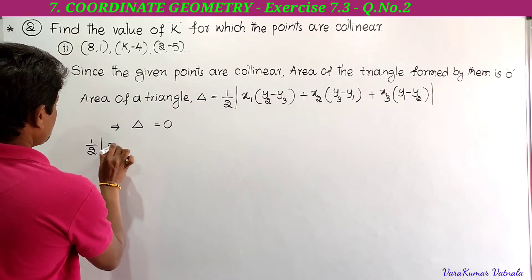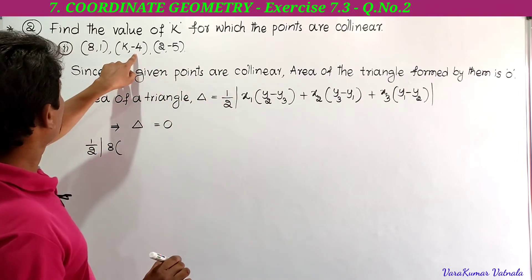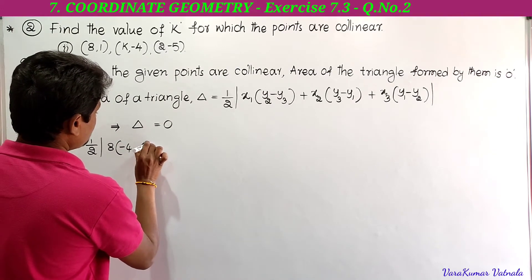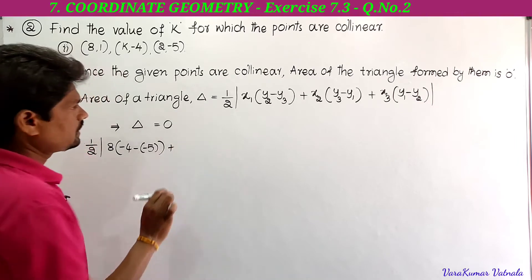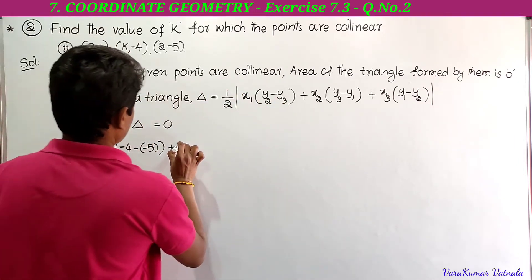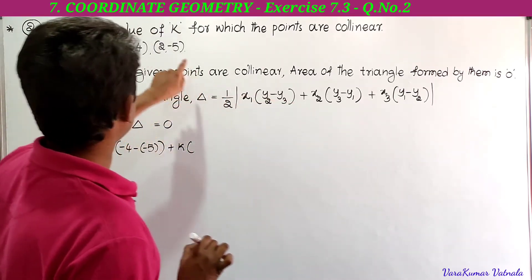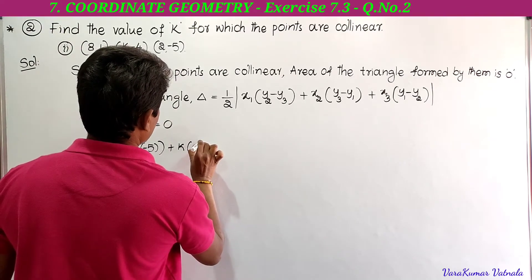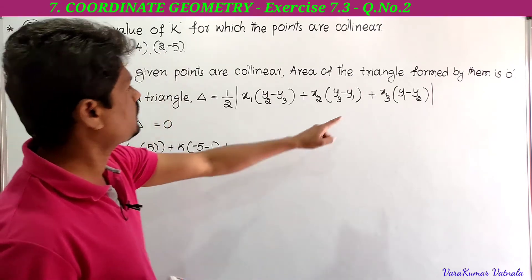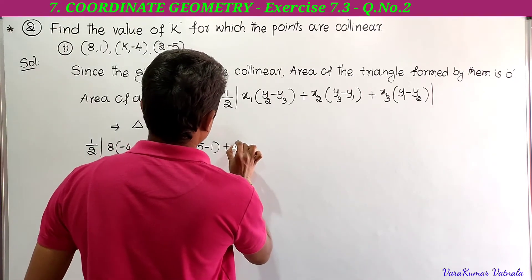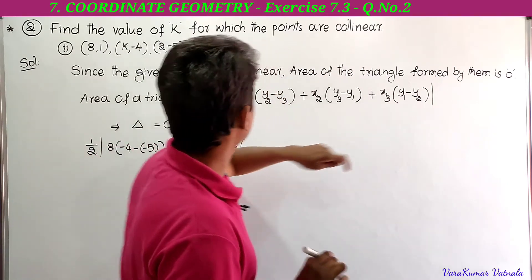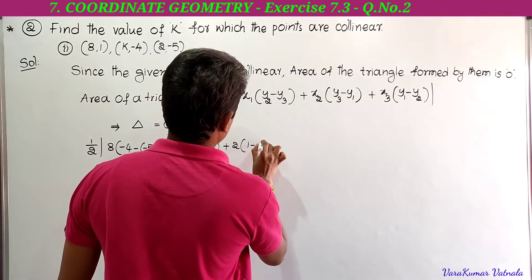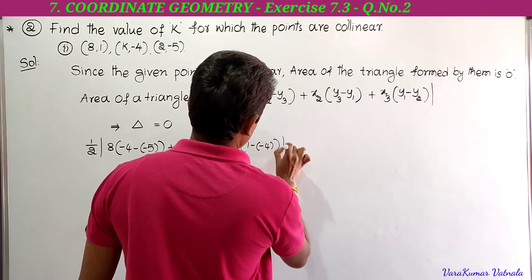8 into (y2 - y3): y2 is -4, y3 is -5, so -4 minus (-5). Plus x2 into (y3 - y1): x2 is k, y3 is -5, y1 is 1, so (-5 - 1). Plus x3 into (y1 - y2): x3 is 2, y1 is 1, y2 is -4, so 1 minus (-4). All equals 0.